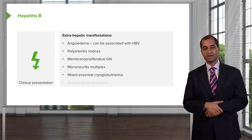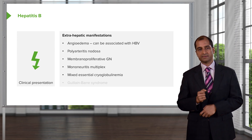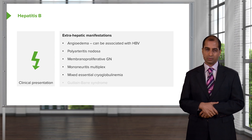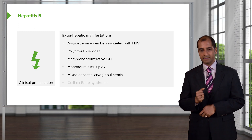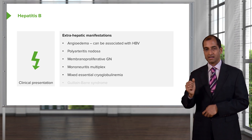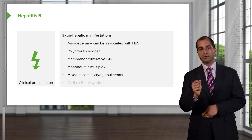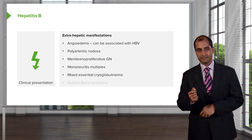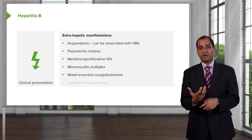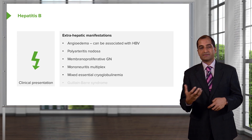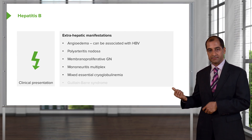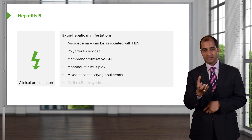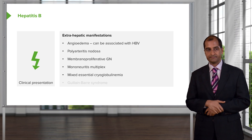Important here as well is cryoglobulinemia. This is more commonly found in hepatitis C. Allow the name to speak to you — cryo means cold. Upon exposure to cold, because of the immunoglobulins involved in viral hepatitis, the globulins will precipitate. When they precipitate, this is referred to as cryoglobulinemia. During cold conditions, the proteins aggregate or precipitate.